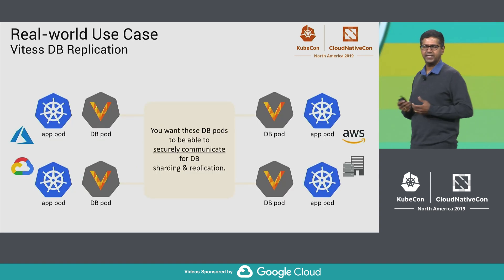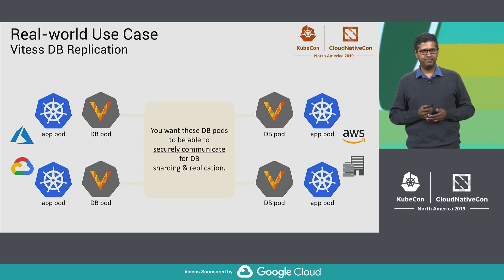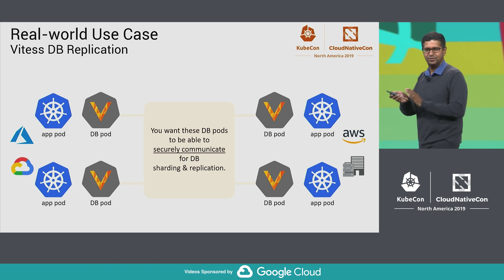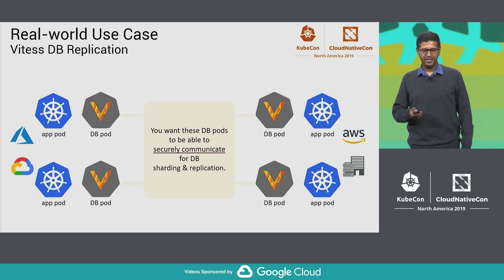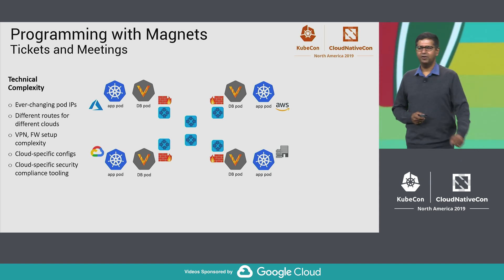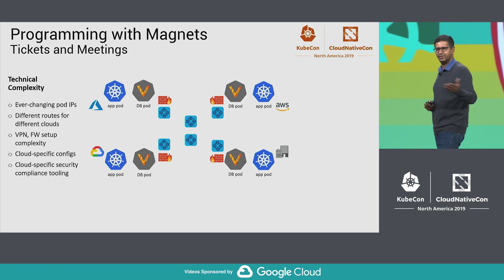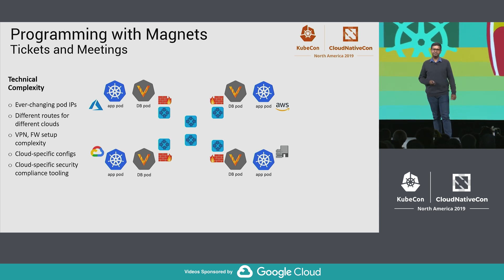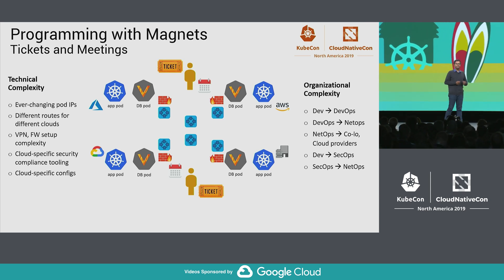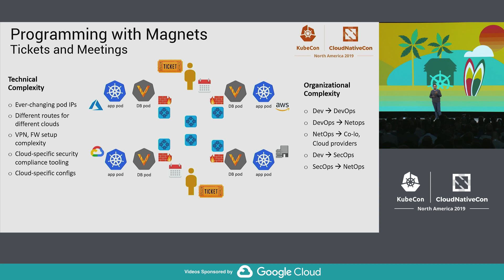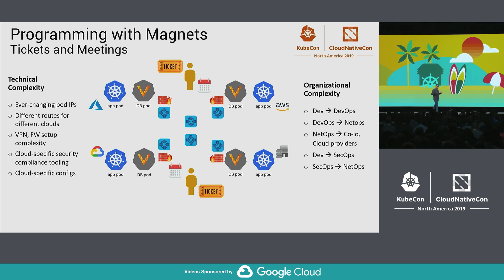In this picture up here, we have a use case where there are four databases — three running on public clouds, one on-prem — and they simply want to communicate with each other securely, to be able to either shard and/or replicate. How would you solve this today in a cloud-native world? By the way, congratulations to Vitesse on graduating and becoming a graduated project. One way to program that network is to use magnets. You start with the technical complexity of dealing with ever-changing pod IPs, different routes for different clouds, firewall and VPN complexity, different configs and compliance needs for the different cloud vendors. Then you run into organizational complexity, where you have devs, DevOps, NetOps, SecOps, colocation providers, and cloud providers — and you need to talk to all of them. Each one of those labels is not a single person, it's a team. So meetings and tickets and meetings and tickets — magnets.